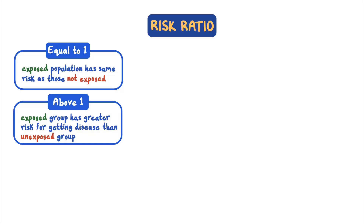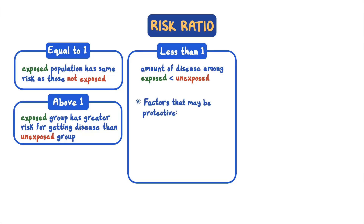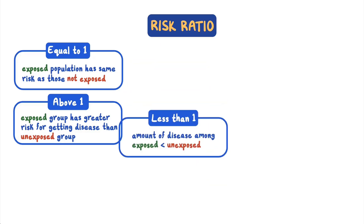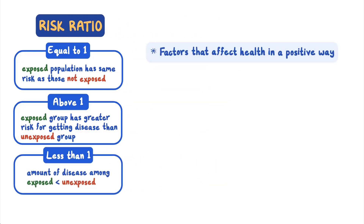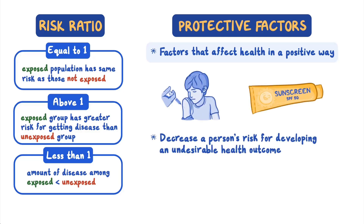Some risk ratios are less than 1, indicating that the amount of disease among the exposed group was less than among the unexposed group. You find risk ratios less than 1 for factors that may be protective, like getting the flu vaccine to produce immunity to the flu, or wearing sunscreen to avoid getting skin cancer from the sun's ultraviolet rays. Factors that affect health in a positive way are called protective factors, which decrease a person's risk for developing an undesirable health outcome.